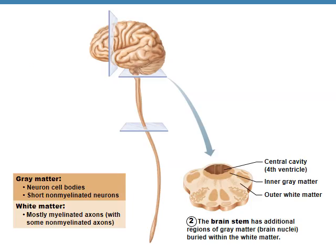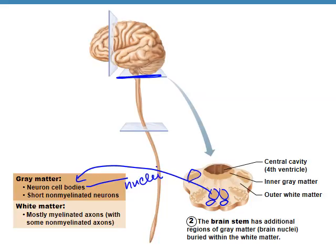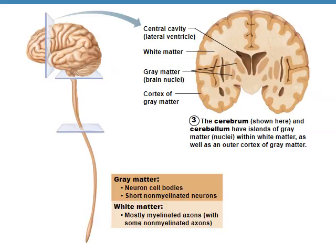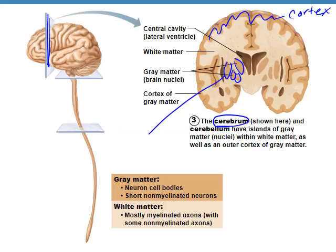Inside the brain — this is a cross section of the brain stem — we can see many areas of gray matter. The gray matter contains neuron cell bodies, and we call these nuclei. In a frontal section of the cerebrum, we see the cortex, which is the gray matter on the outside, and then sections of nuclei — clusters of gray matter — inside, surrounded by white matter. So the organizational structure is a little different in the brain versus the spinal cord.